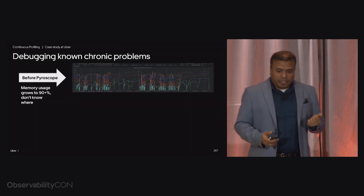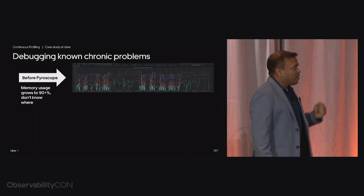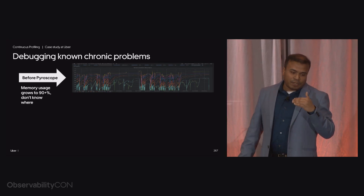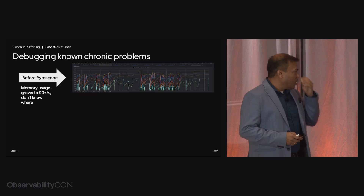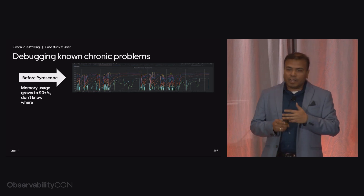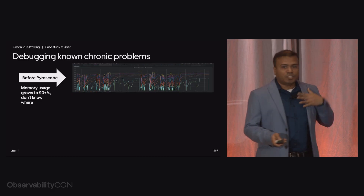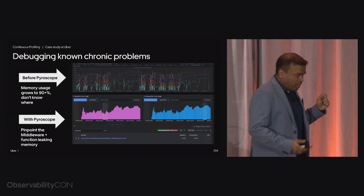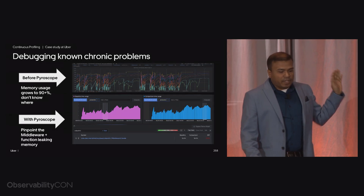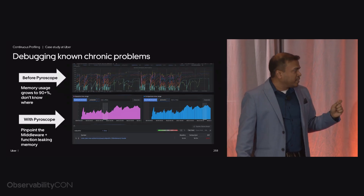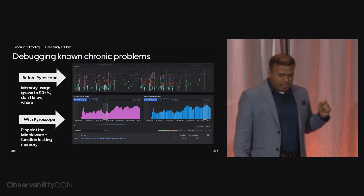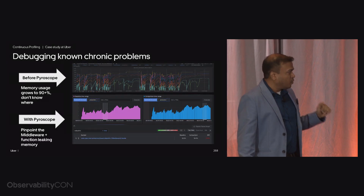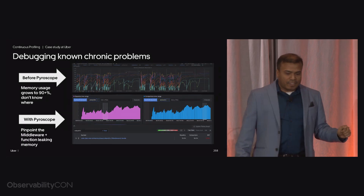The next case study: here is a Grafana chart of memory usage, and we noticed that for a specific service, the memory usage grew to more than 90%, and we had no idea — very hard to understand that metric chart. Once we started looking at it with Pyroscope, you see the same chart on the left and right, but on the left you can select your baseline and on the right you can select your comparison. Below you get a differential flame chart, as well as a table which points to the line of code actually responsible for it.